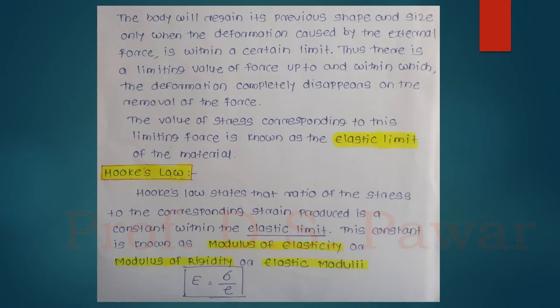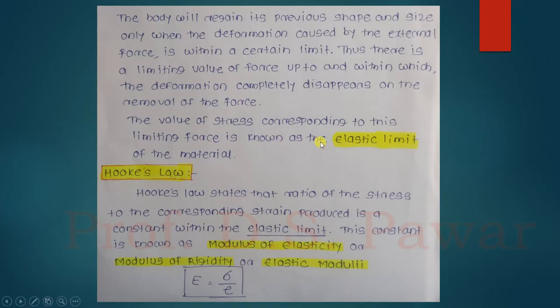The body will regain its previous shape and size only when the deformation caused by the external force is within a certain limit. When you apply force to a spring or rubber, you must apply it only up to a certain limit. There is a limiting value of force up to and within which the deformation completely disappears on removal of the force. If you apply extra force beyond that, the body will not behave elastically and will not regain its original size and shape. The value of stress corresponding to this limiting force is known as the elastic limit of the material.